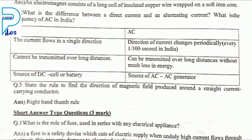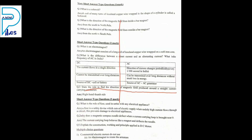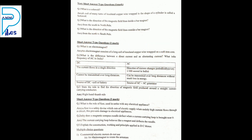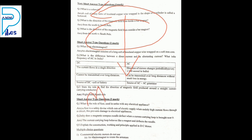State the rule to find the direction of magnetic field produced around a straight current-carrying conductor. In the current-carrying conductor, iron filings arrange in a circle shape. We can tell it is the right hand thumb rule. Current flows in the downward direction, and magnetic field is in the horizontal direction. This is also called Maxwell's screw rule — refer the PDF.